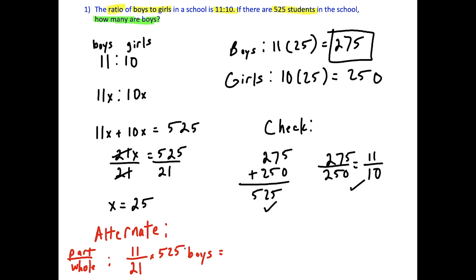And when we simplify this here, well, once again, 525 divided by 21 is 25. And when we multiply 11 times 25, we also get 275. So this is another method here, is to write the part over whole and multiply it by the total number of students. And that'll tell you how many boys you have.